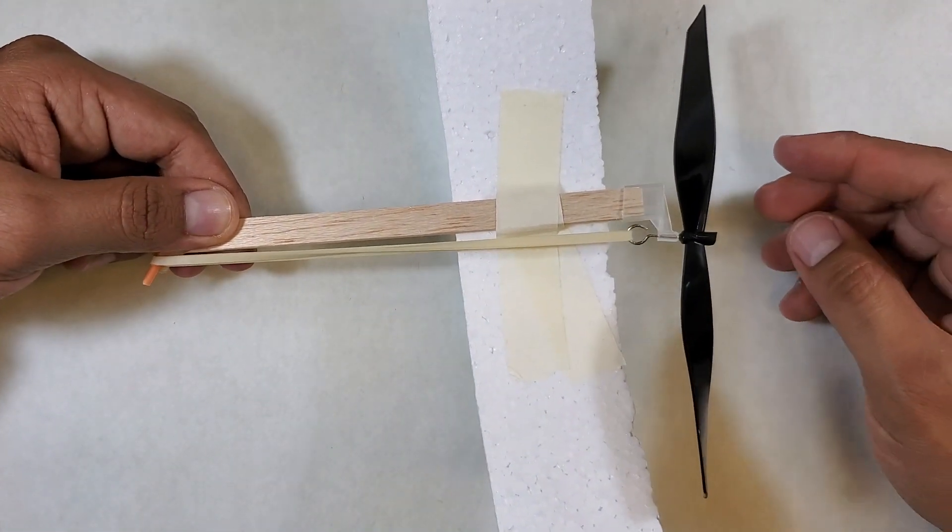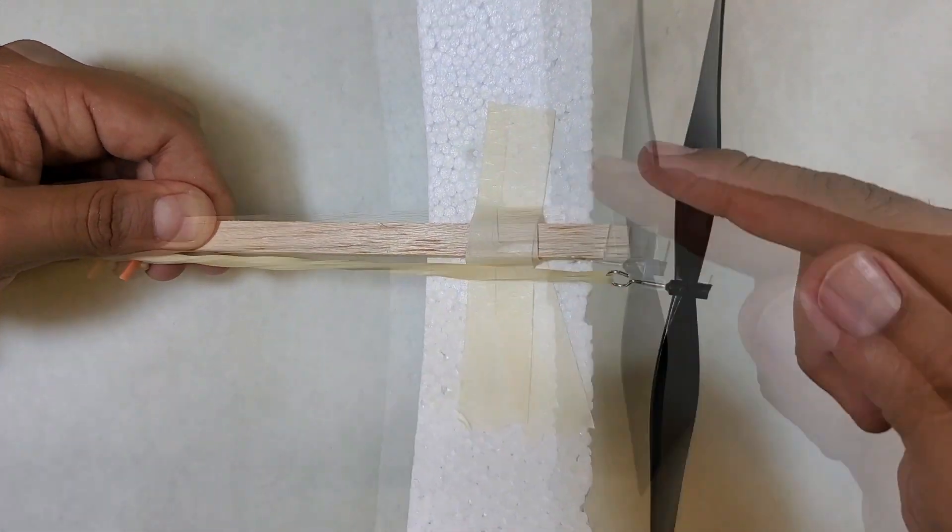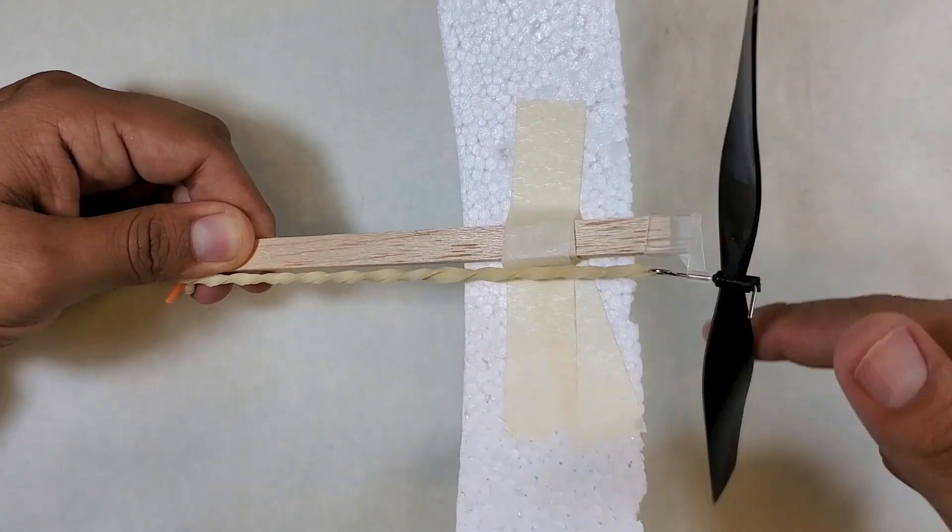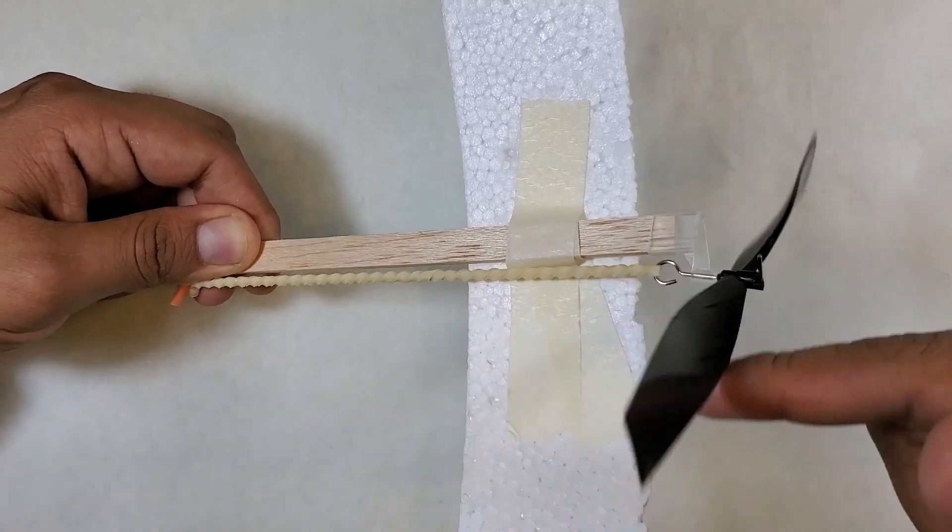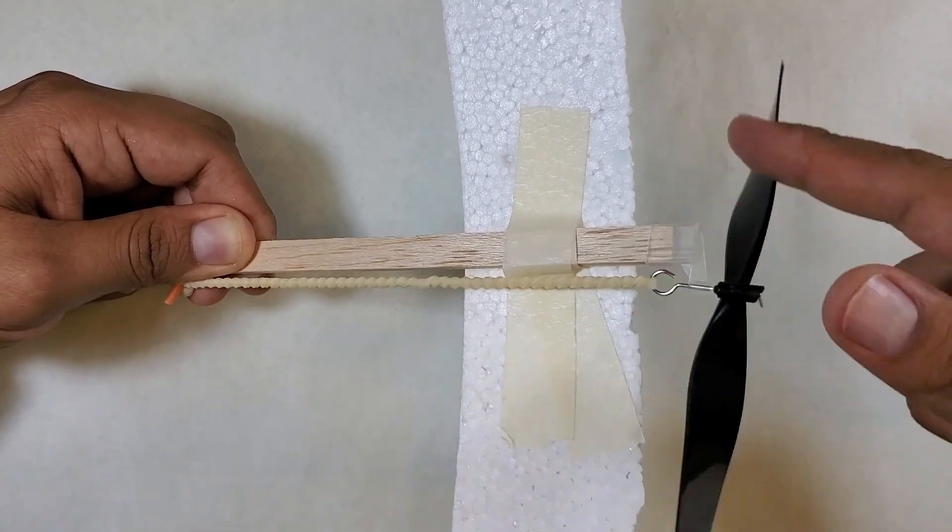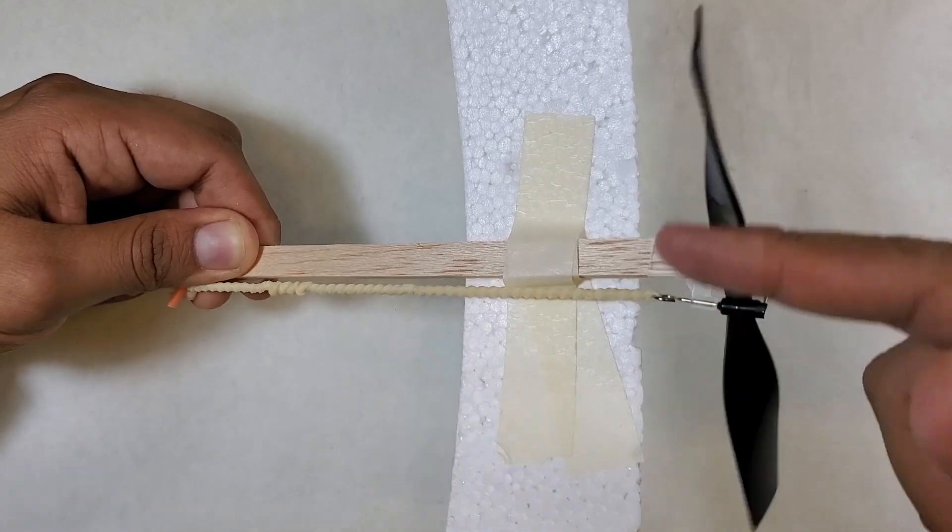When you wind the propeller and let it go to feel which way the wind is blowing, it should be blowing back over the body of the helicopter. If it's not, you should wind the propeller in the opposite direction.